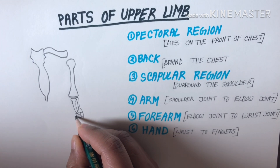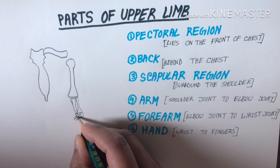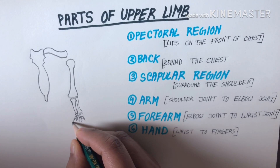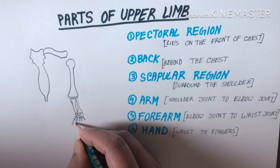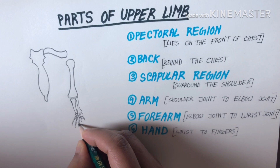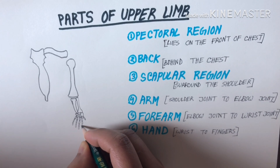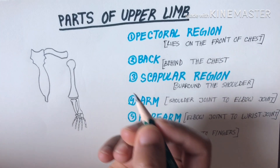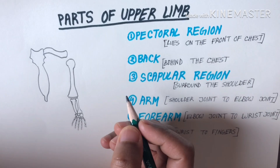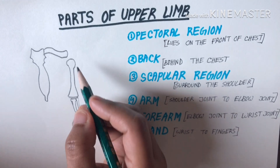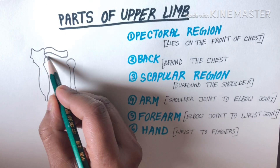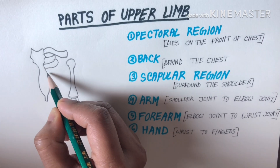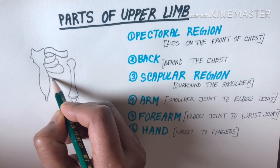So our arm is made by only one bone — the humerus. And our forearm is made by two bones — the radius and ulna. Now I am drawing the hand. Then I will draw the ribs, because we know in the chest we have ribs.